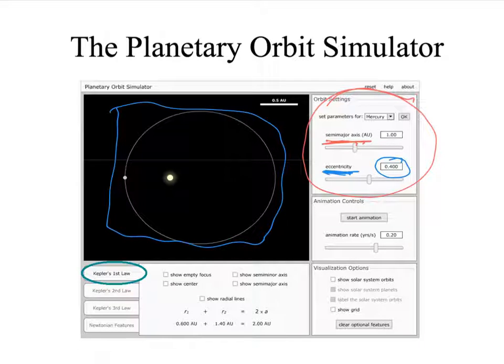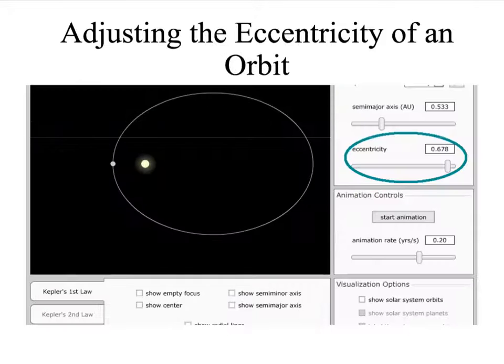You can see the Sun is offset from the center and of course we know that that will be at one of the two foci of this ellipse. But you'll see that as we increase the eccentricity that the ellipse flattens out. So here we've increased the eccentricity to 0.678, so from about 0.4 to about 0.7, and you can see that the ellipse looks much more elongated.